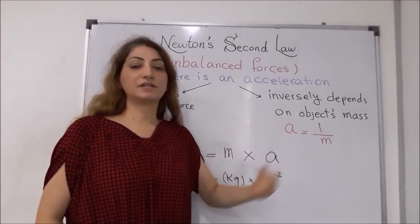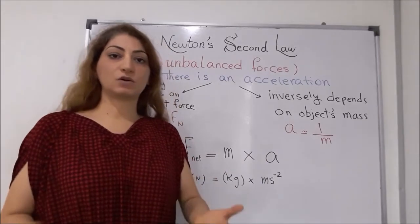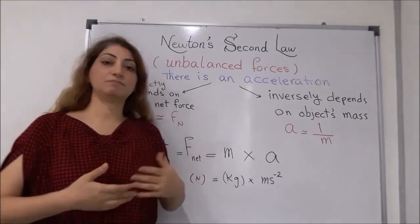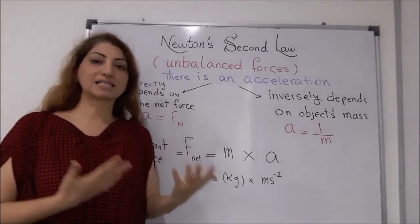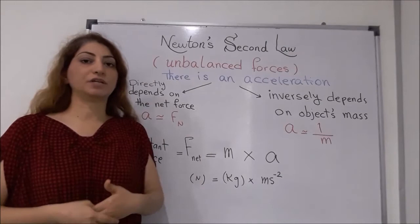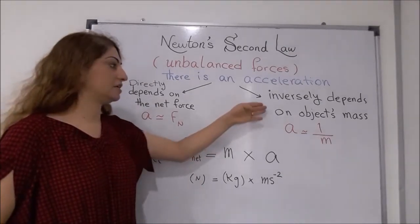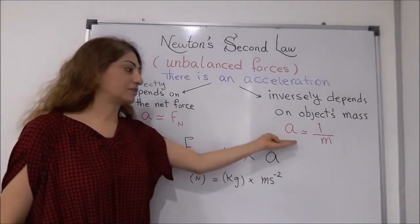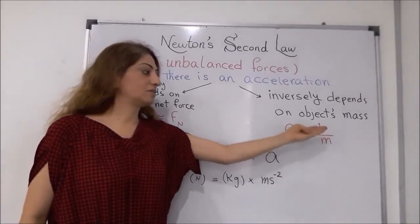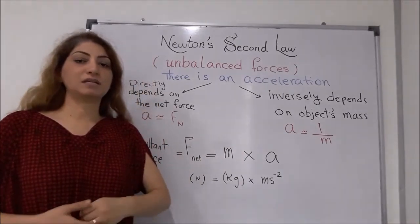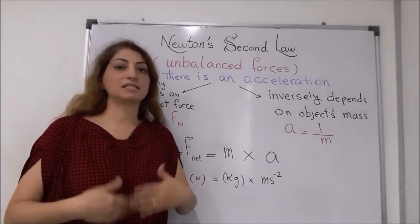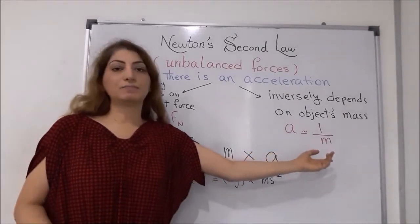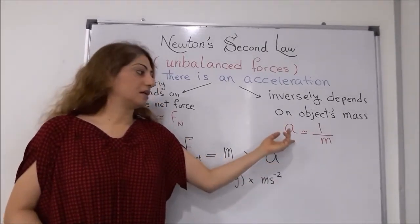The next factor is the mass of the object. The relationship between the mass of the object and the acceleration of the object is indirect, or inversely dependent. It means the higher the mass, the less the acceleration. Alternatively, the lower the mass, the higher the acceleration.